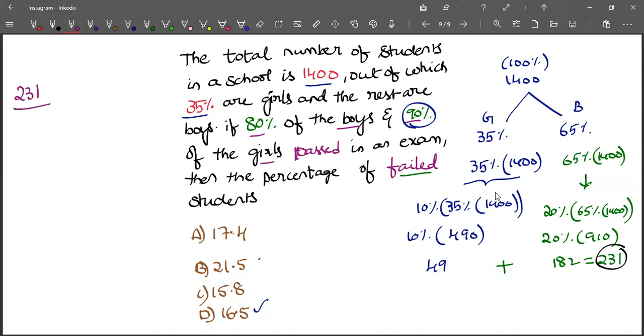231 divided by total 1400 multiplied by 100. These two zeros will get cancelled. 14 into 1 is 14, remaining is 91. And 14 into 6 is 84. 91 minus 84 is 7. Put the decimal, it becomes 7.0. 14 into 5 is 70. So 16.5%.